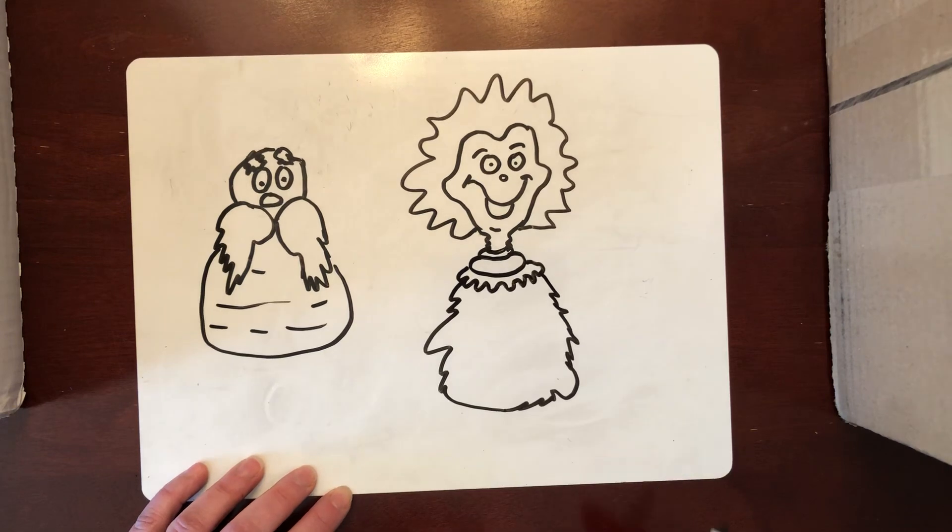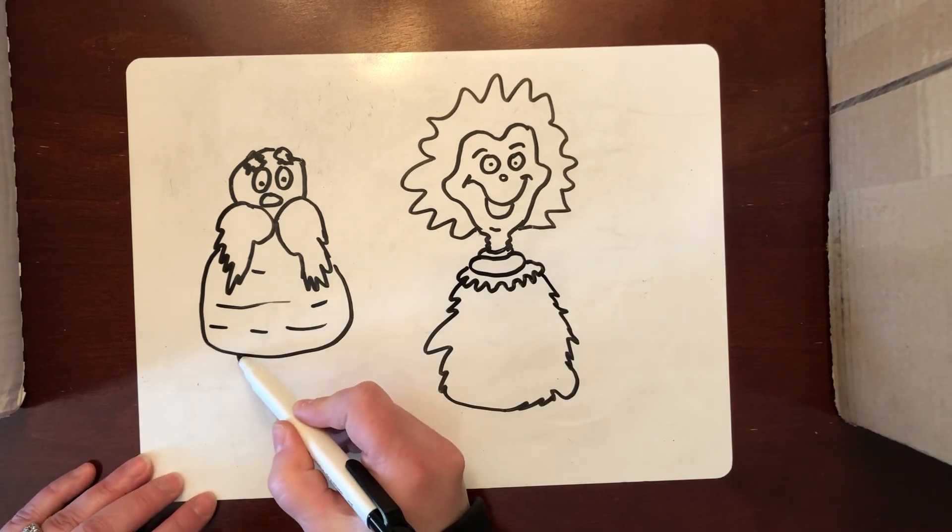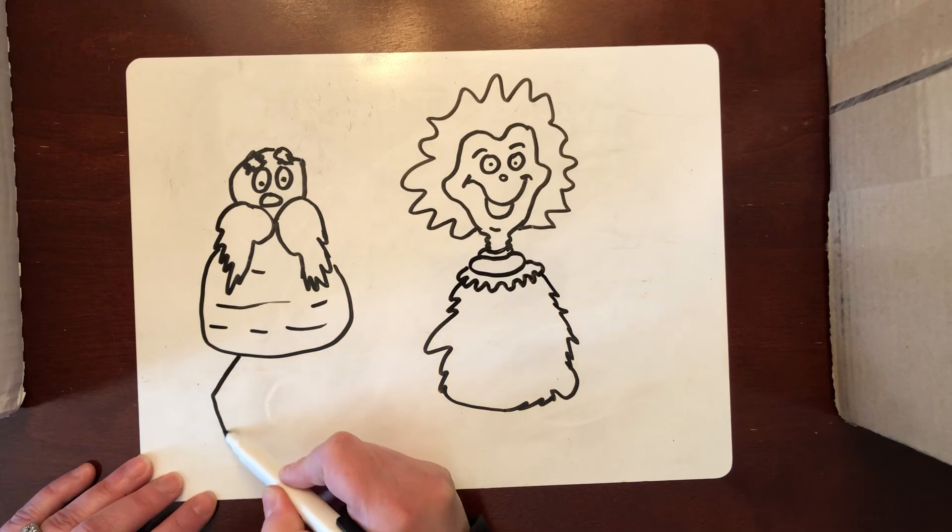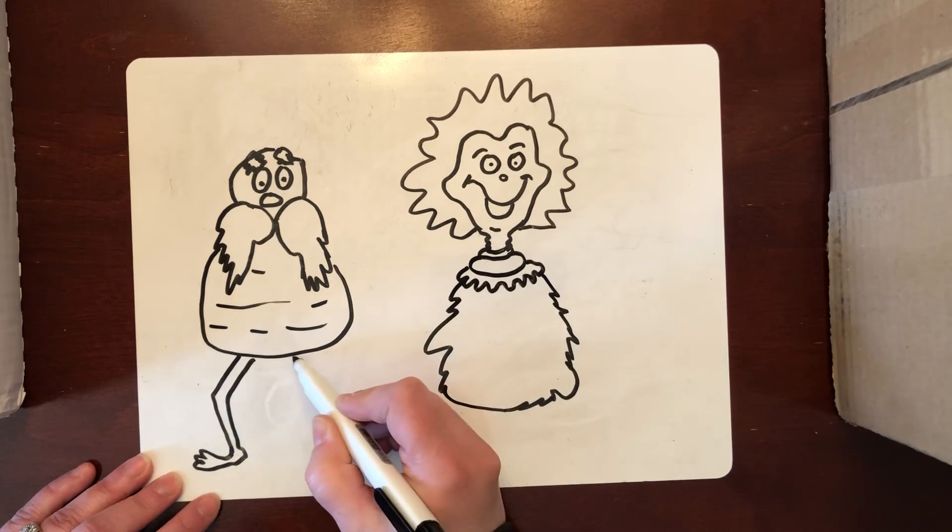Okay, once you've got your body you're going to work on feet, legs and arms. So you can have long legs, you can have short legs. I'm going to make this guy have long legs and a few toes. Skinny long skinny legs.